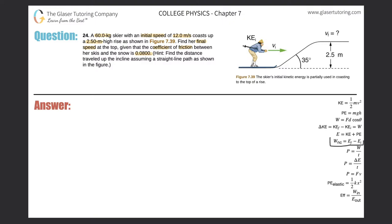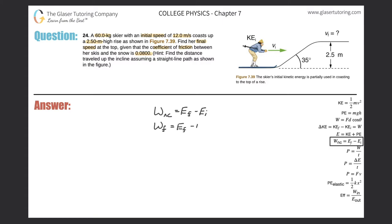Starting with the equation: the work done by non-conservative forces equals the final amount of energy minus the initial amount of energy. The non-conservative force here is friction, so we can write: work due to friction = final energy − initial energy.